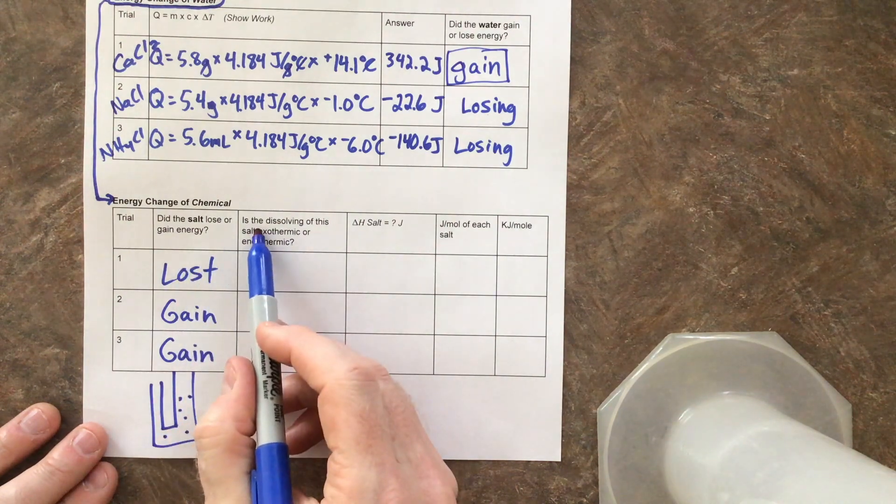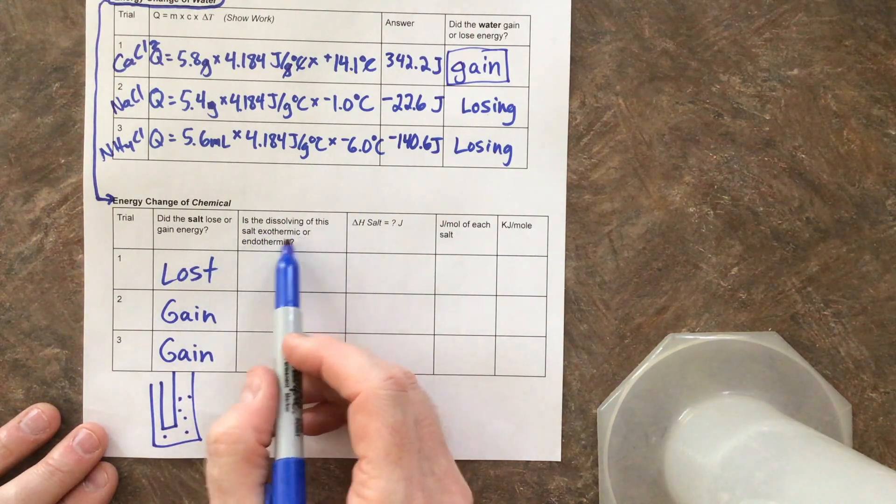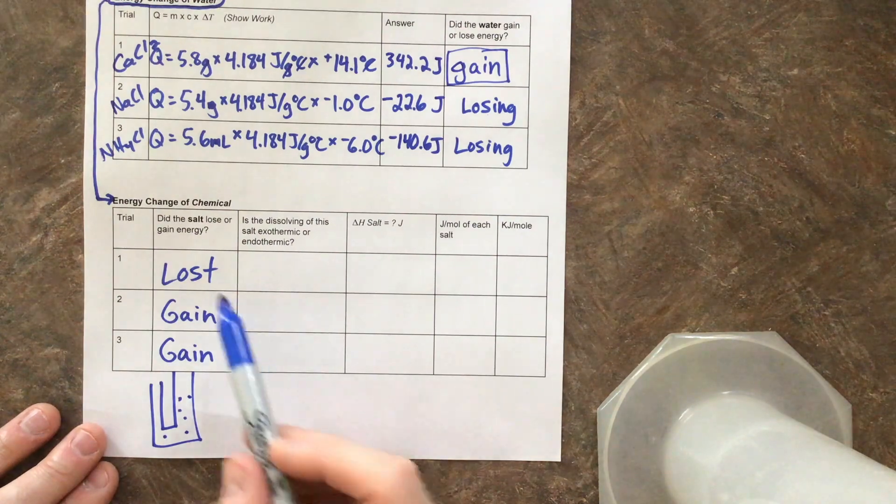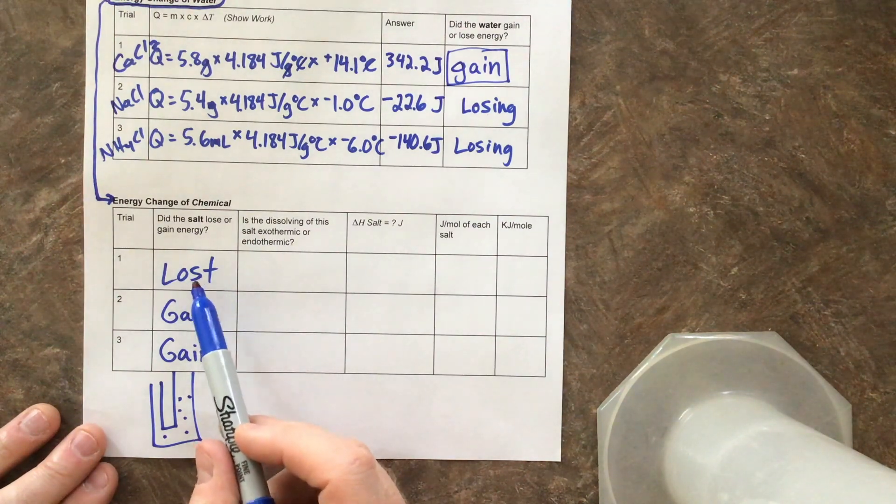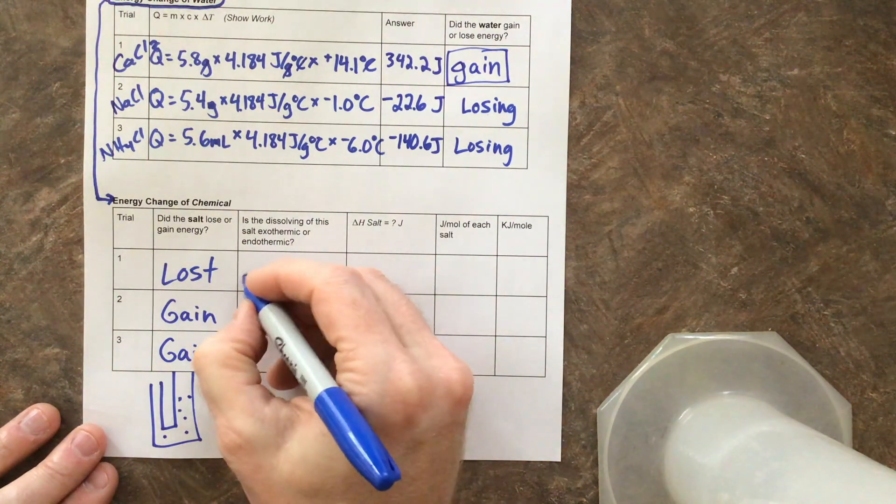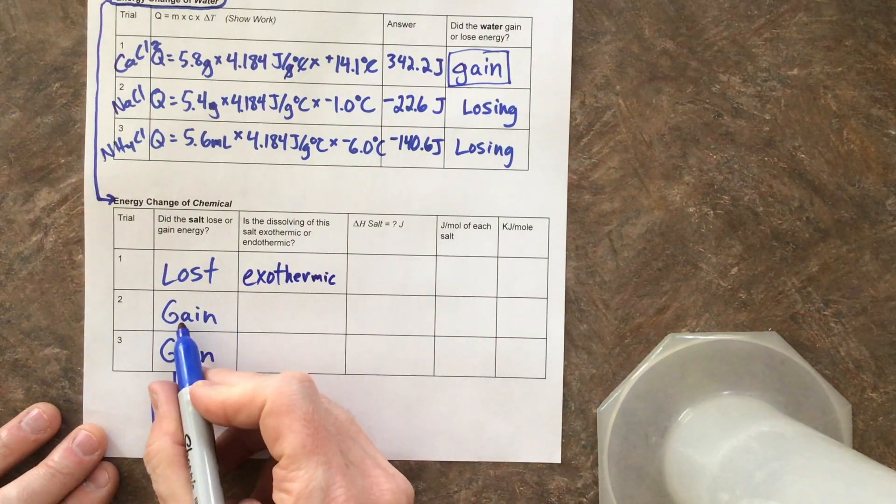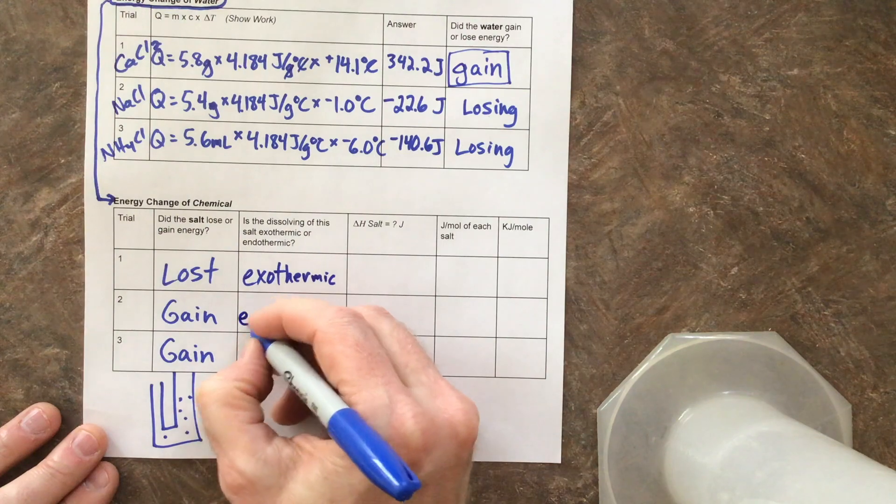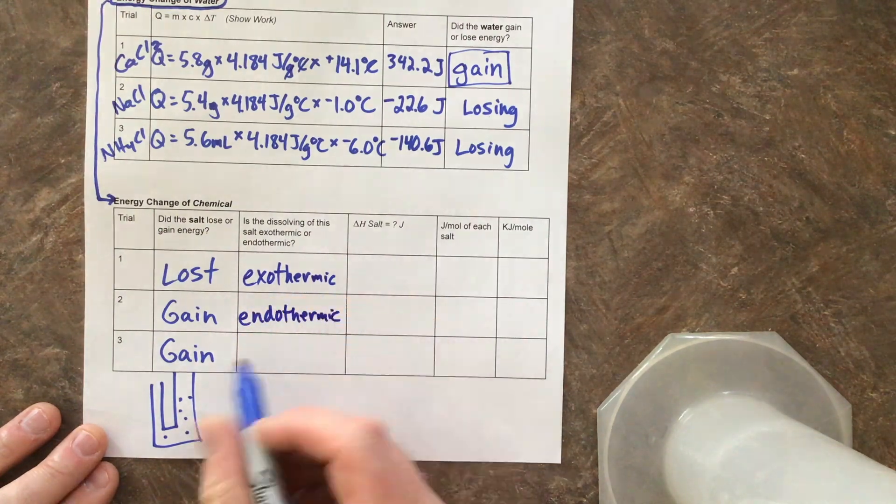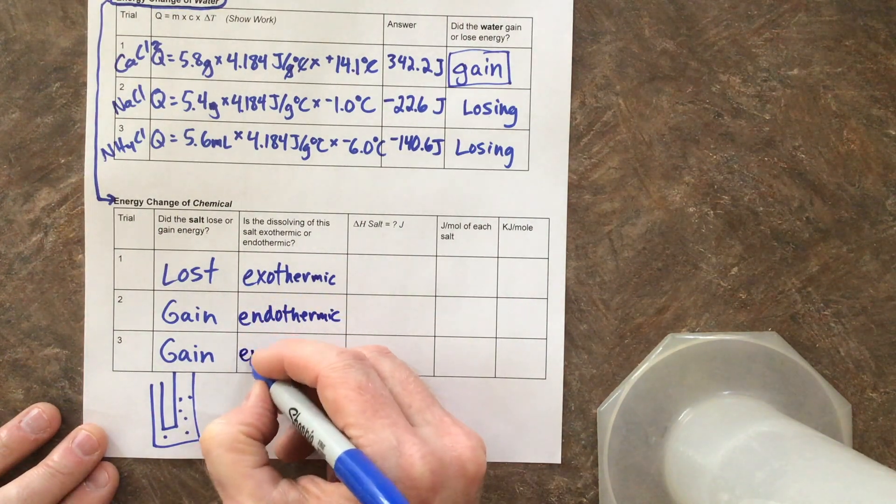So when we ask this question, is the dissolving of this salt exothermic or endothermic? Well, in this case, this salt loses energy. And if you lose energy, that is exothermic. And in this case, if the salt was gaining energy, then this was endothermic. And in this one, same thing, it was endothermic.